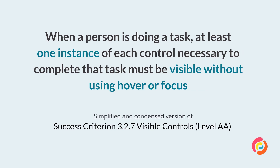Next up, 3.2.7, Visible Controls. In this requirement, we're asked that when a person is doing a task, at least one instance of each control necessary to complete the task must be visible without the need to hover or focus on an element. Hidden controls may be difficult for people to find, including those with cognitive disability, low vision, and mobility and motor impairment. Our biggest culprit is when controls are hidden until you hover over them, or as a keyboard user, are tabbed to them. Even if a user discovers a hidden control, they might not remember how to show and operate it next time. Don't hide controls — make them visible and persistent on screen at all times.